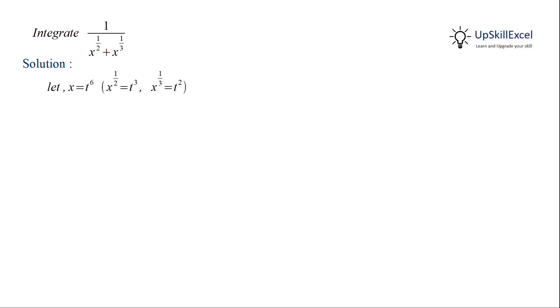This means that x raised to power 1/2 will be t cubed and x raised to power 1/3 will be t squared. Also taking derivative on both sides we get dx equals 6 multiplied by t raised to the fifth dt.